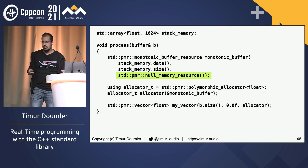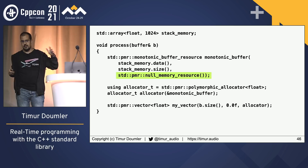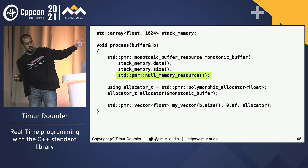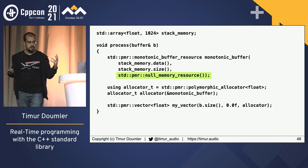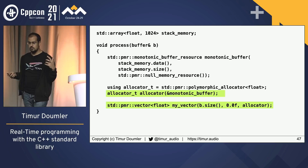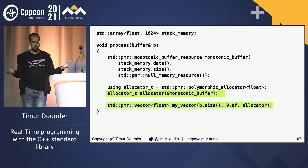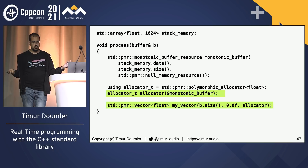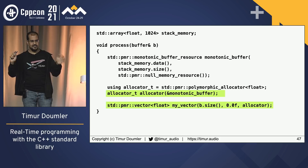It's not only real-time safe but also very cache-friendly because it's basically one block of memory. This wasn't really designed for real-time stuff — it was designed to make allocations faster — but combined with null_memory_resource we can use it for real-time purposes. We can then construct a PMR allocator object with that memory resource and construct a pmr::vector with that allocator, giving us a real-time safe vector. I double-checked this with Pablo Halpern, the author of std::pmr, who confirmed it's correct.